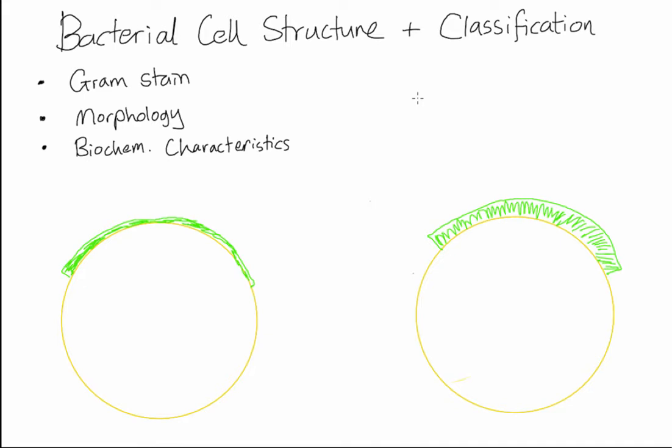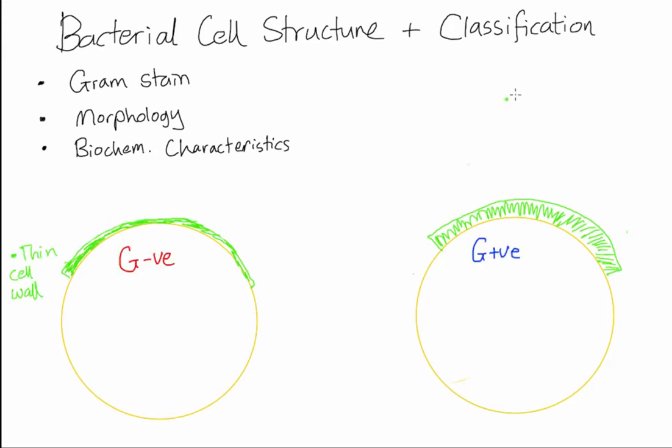The round circle is their plasma membrane and then that green thing on the outside is their cell wall. On the right you can see the bacteria has a much thicker cell wall. This is a gram positive bacteria. The cell wall is made of peptidoglycan, it's made by an enzyme called transpeptidase or penicillin binding protein.